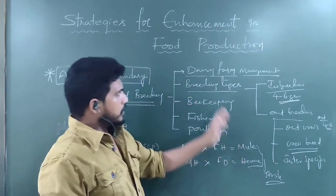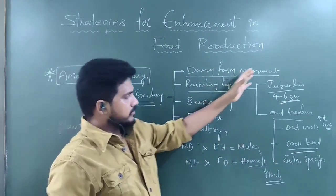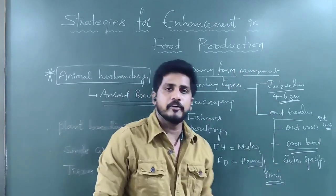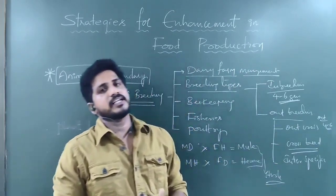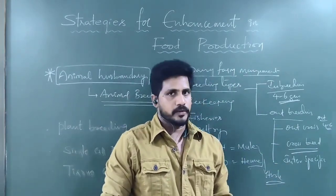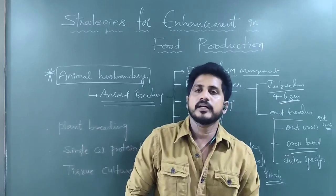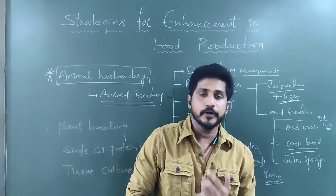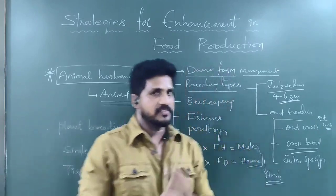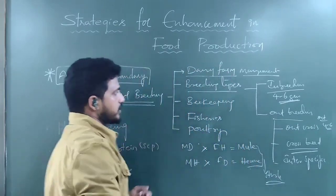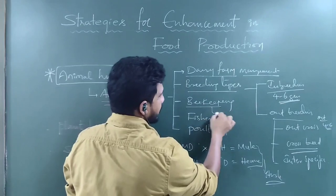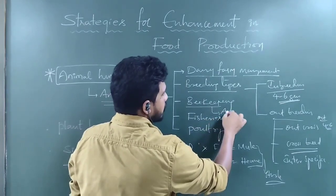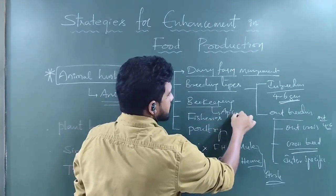All these breeding steps will be discussed, including artificial insemination, which we also discussed in human reproduction. Next is beekeeping, which is also called apiculture.